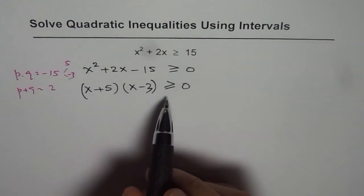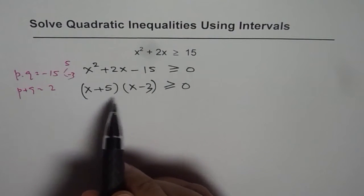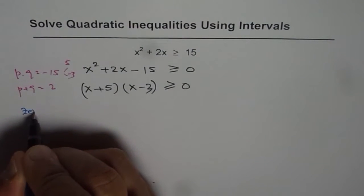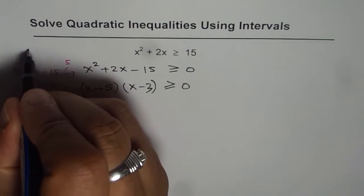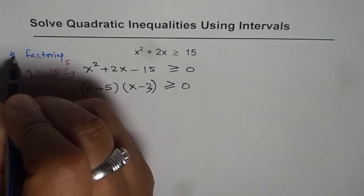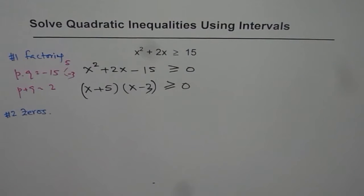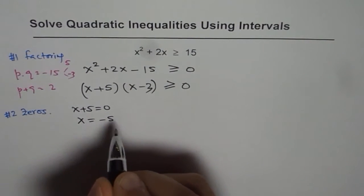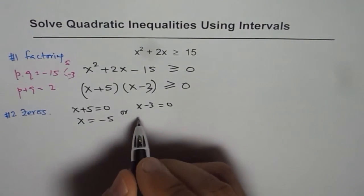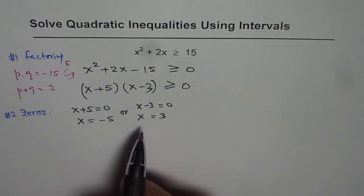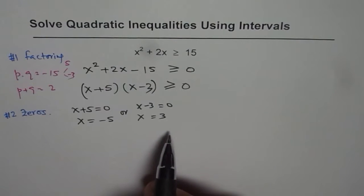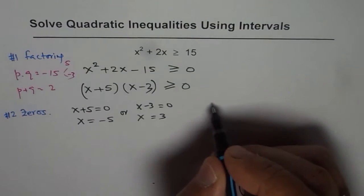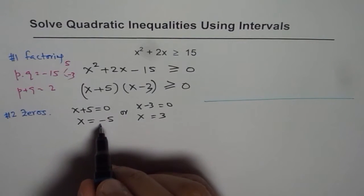So we get an inequality with factors on the left side. Since we have the factors, it's easy to figure out where the zeros are. Next step is to find the zeros. Each factor can be equated to 0. So x plus 5 equals 0 gives us x equals minus 5, and x minus 3 equals 0 gives us x equals 3. Now zeros are going to divide our interval into different parts.